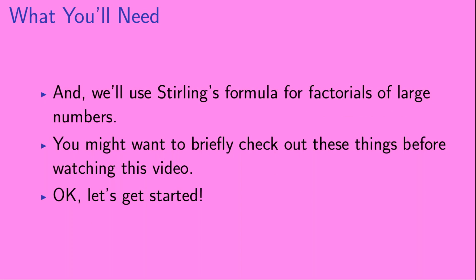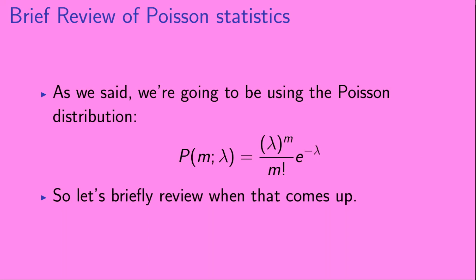Okay, let's get started. We're going to be using the Poisson distribution, written here as P of m given lambda. Here, it's a function of m, which is a non-negative integer, and it takes a parameter lambda, which is non-negative but doesn't have to be an integer. Let's briefly review where this comes up.